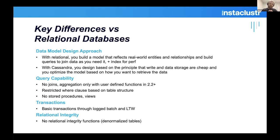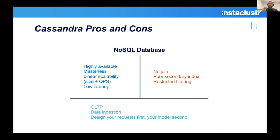Cassandra doesn't have much query capability in terms of joins. By doing away with joins, it gains incredible scalability and simplifies relationship consistency concerns. There are some restrictions — the query language, CQL, is very similar to SQL, deliberately so to make adoption easier. But that can also be challenging, because things you're used to doing with SQL may not work with Cassandra.